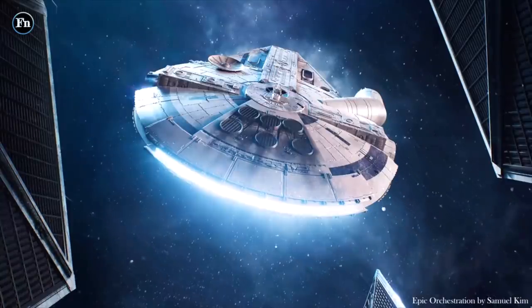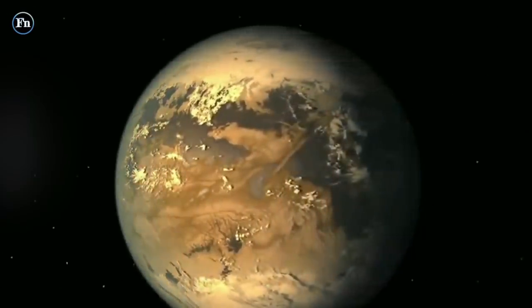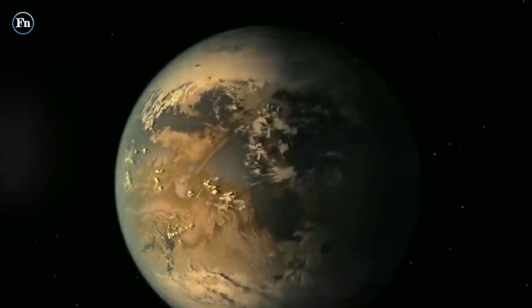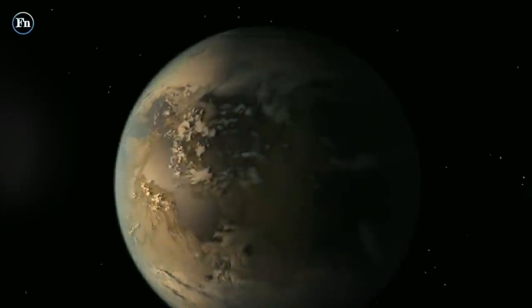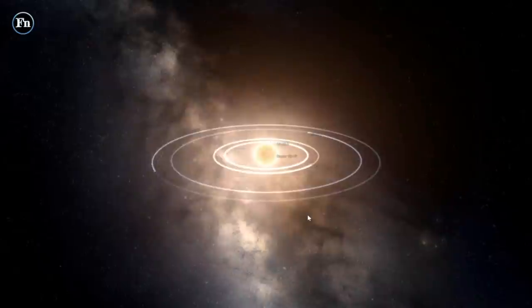We cannot say whether life exists on Kepler-452b, but we know that it has some things in common with Earth. For example, Kepler-452b takes 385 Earth days to complete its orbit around its star, nearly longer than one Earth year.